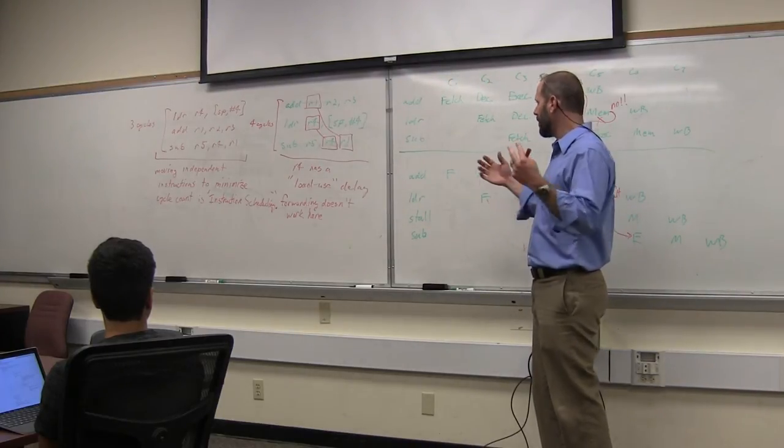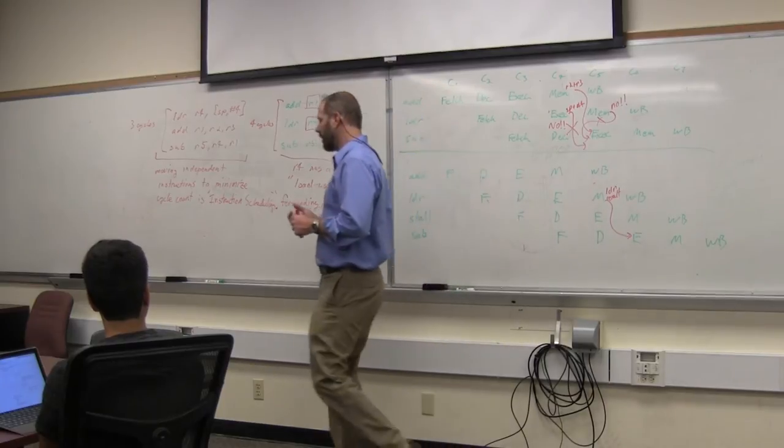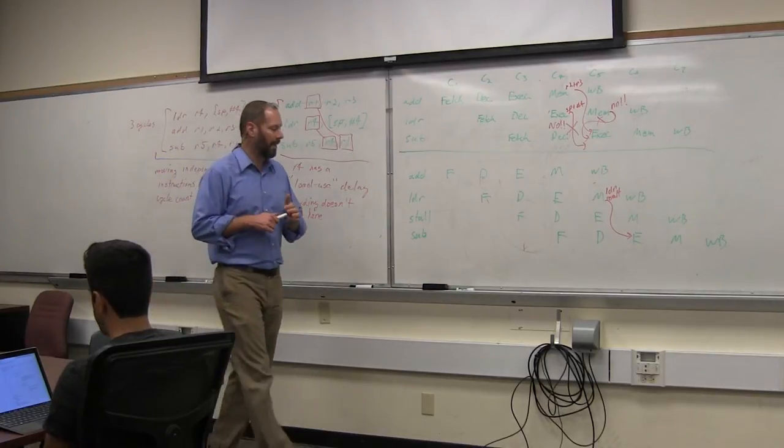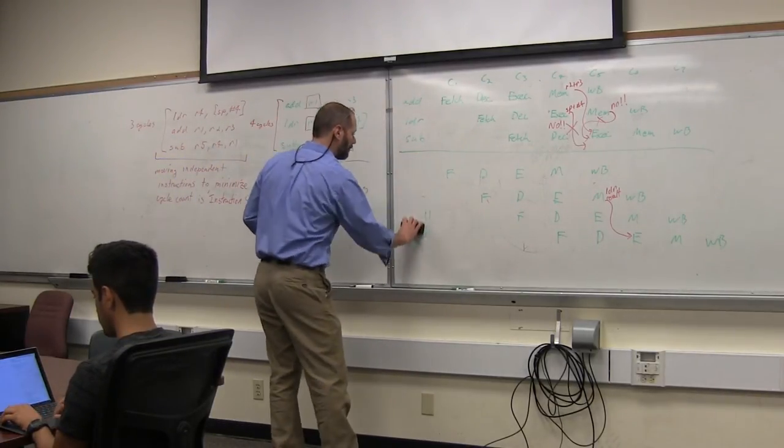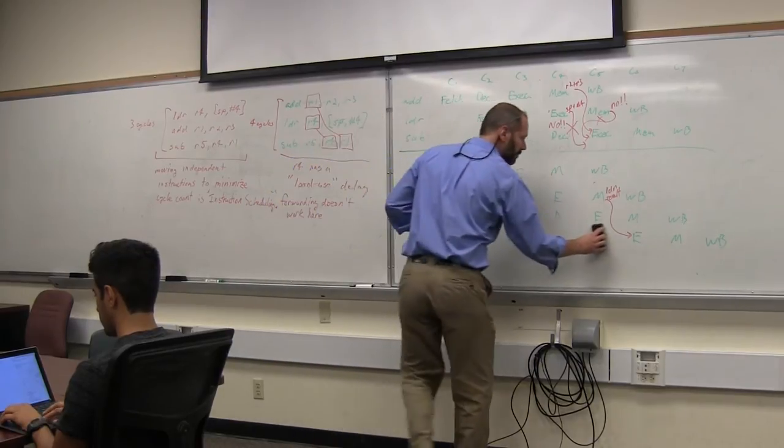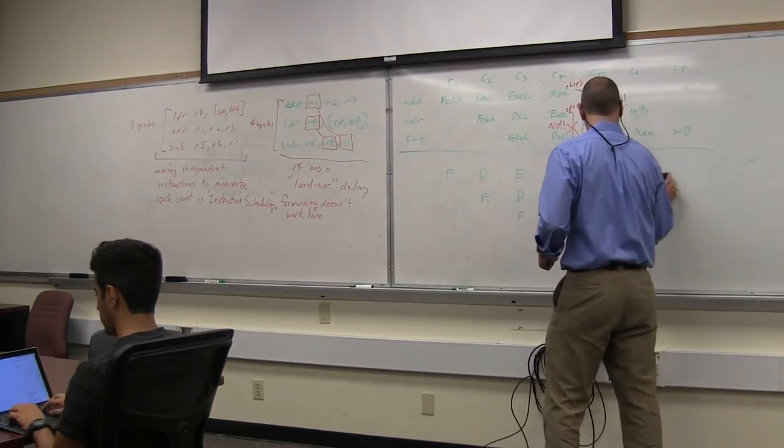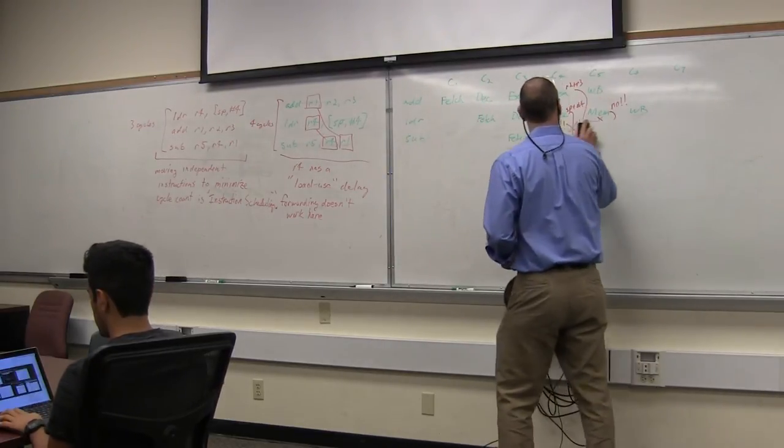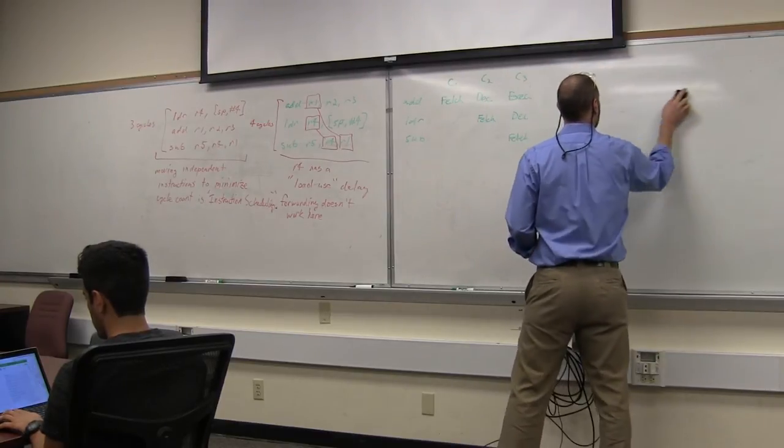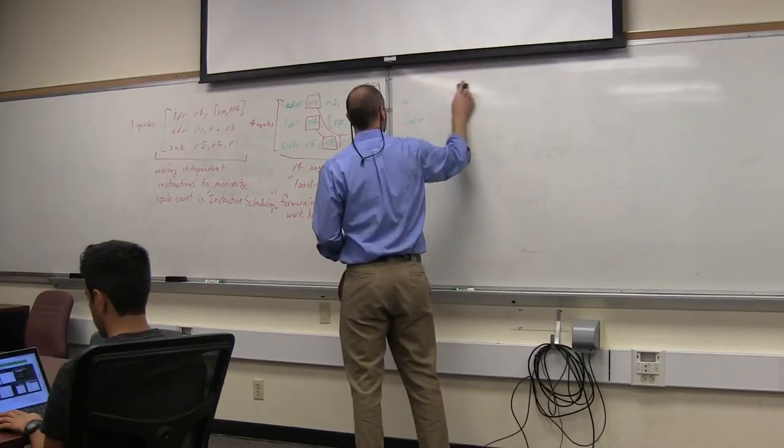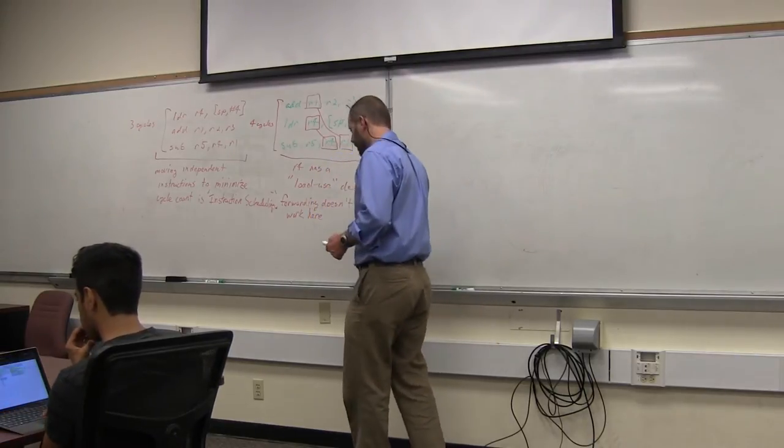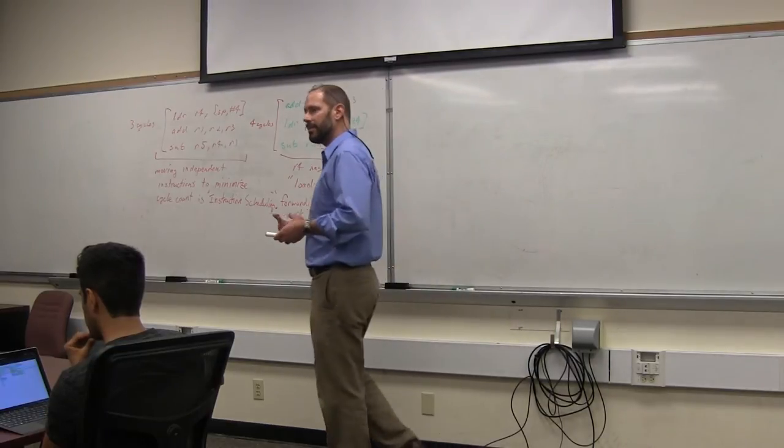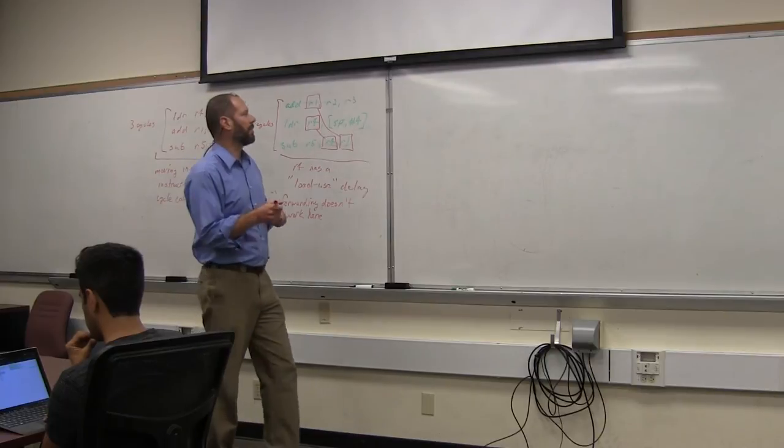So, to kind of wrap it all together, let's show the real complexity or the real pipelining implementation of the Raspberry Pi. Last piece. So, the Raspberry Pi doesn't have five stages. It has eight stages.